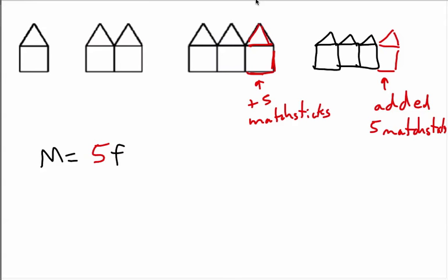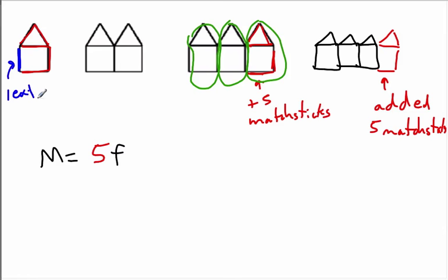Next, let's look at where the plus one comes from in the formula. Looking at the first diagram, we have one group of five matchsticks, and then we've got this extra matchstick on the side — one extra matchstick on the side. In the second diagram, we've got two groups of five, and then the one matchstick at the beginning. So that's going to be plus one, and we get eleven matchsticks altogether. That's where the plus one comes from.